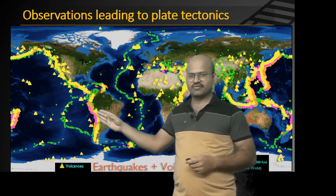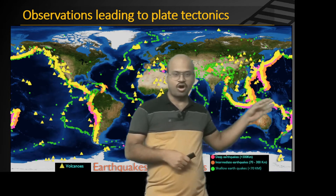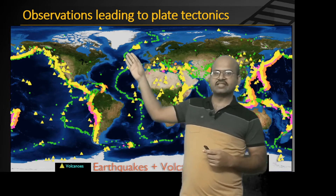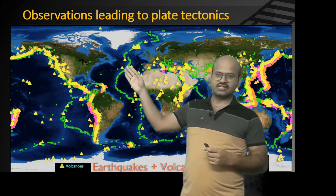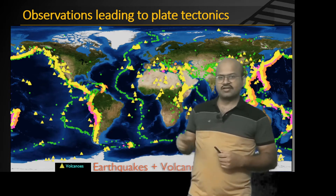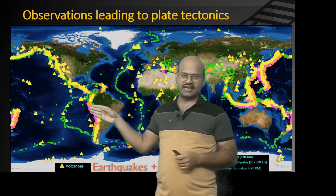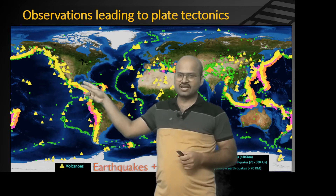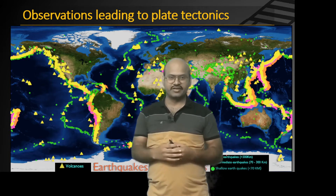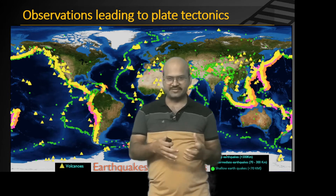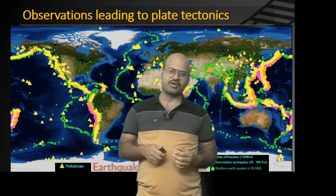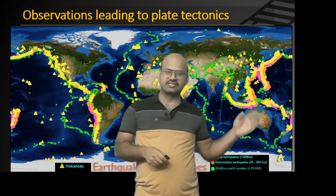Moreover, volcanic mountain data was plotted along with the earthquakes, and it was observed that volcanic mountains had a very high co-location with earthquakes. All regions where there were deep-seated earthquakes had a high number of volcanic activities. In Iceland, which is on the mid-oceanic ridge, there is some volcanic activity, but most volcanic activity is seen along the trenches. Most seismic activities — both volcanic and earthquake — occur along the continental margins, such as the western margin of the North American and South American continents. This gave geologists the thought that something occurring beneath the earth's surface is causing these earthquakes and volcanoes.